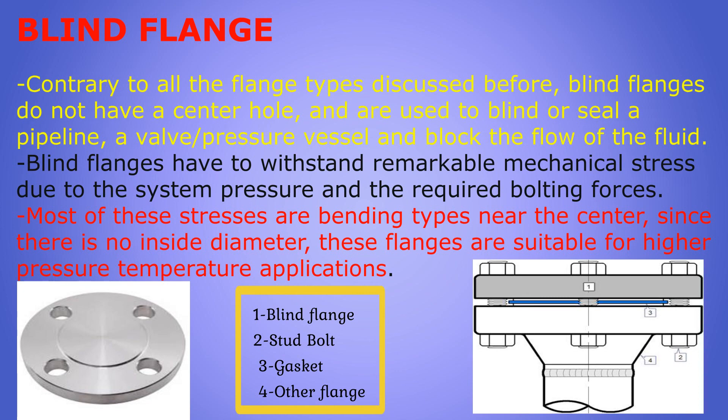Blind flanges do not have a center hole — they are completely blind, which is why they are called blind flanges. They are used particularly for sealing a pipeline, vessel, or well to block the flow of fluid from one side. Blind flanges have to withstand remarkable mechanical stress due to system pressure and required bolting forces; most of these stresses are bending type near the center. Since there is no inside diameter, these flanges are suitable for higher pressure and higher temperature applications.